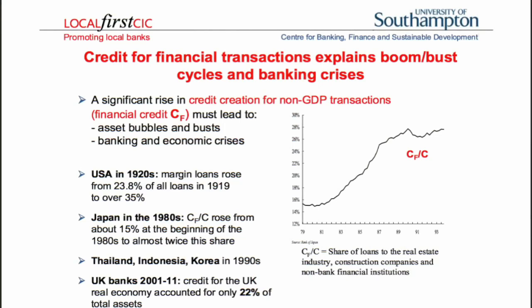Credit for non-GDP transactions — financial transactions — creates asset bubbles and crises. In Japan, credit for real estate was only 15% of bank lending in the early 1980s, then it doubled to 30%, while total lending itself also exploded — a massive credit bubble. This has always happened in other places: the US in the 1920s, Scandinavian countries in the 1980s, the Asian crisis, and banks lending for non-GDP property transactions in the UK, Ireland, Portugal, and Greece.